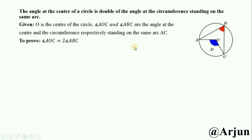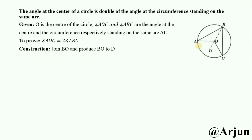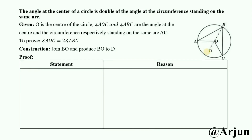We have to prove that angle AOC is two times angle ABC. For the construction, join B and O, and produce BO to point D. This completes our construction and the proof begins.